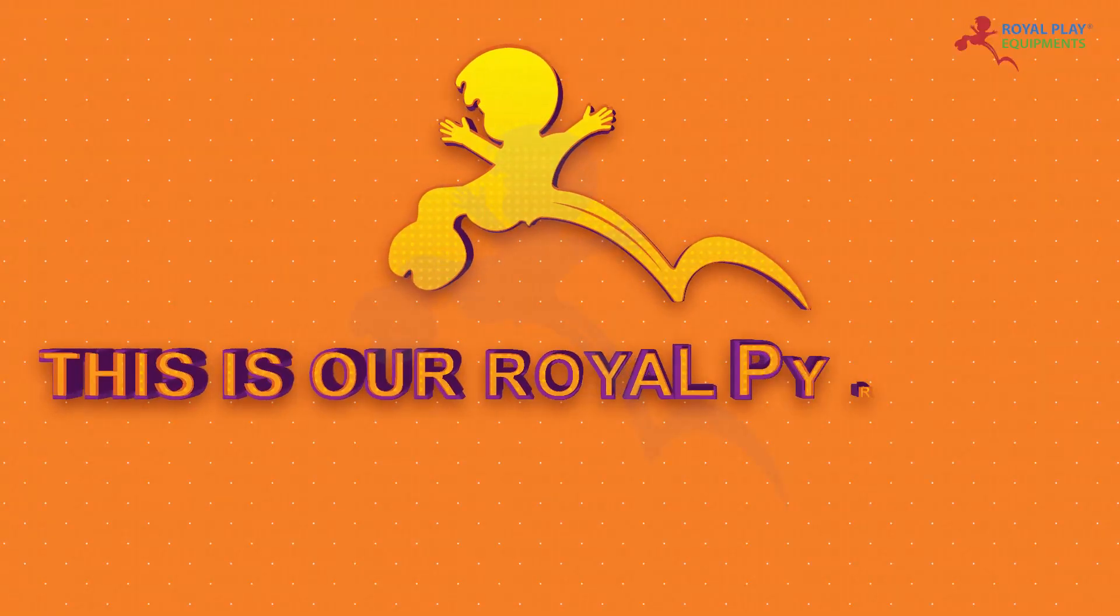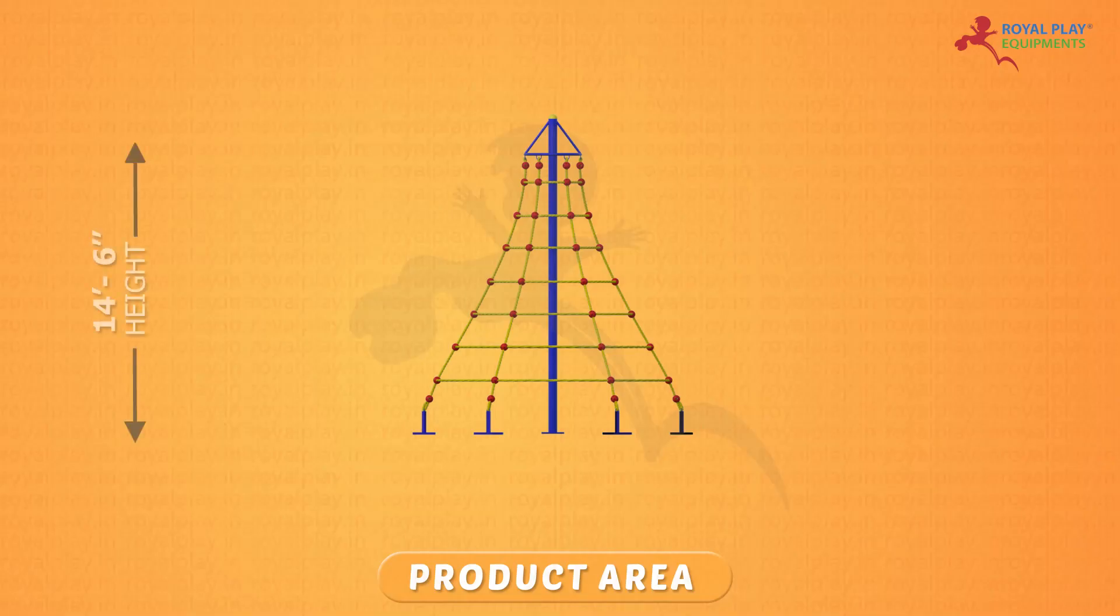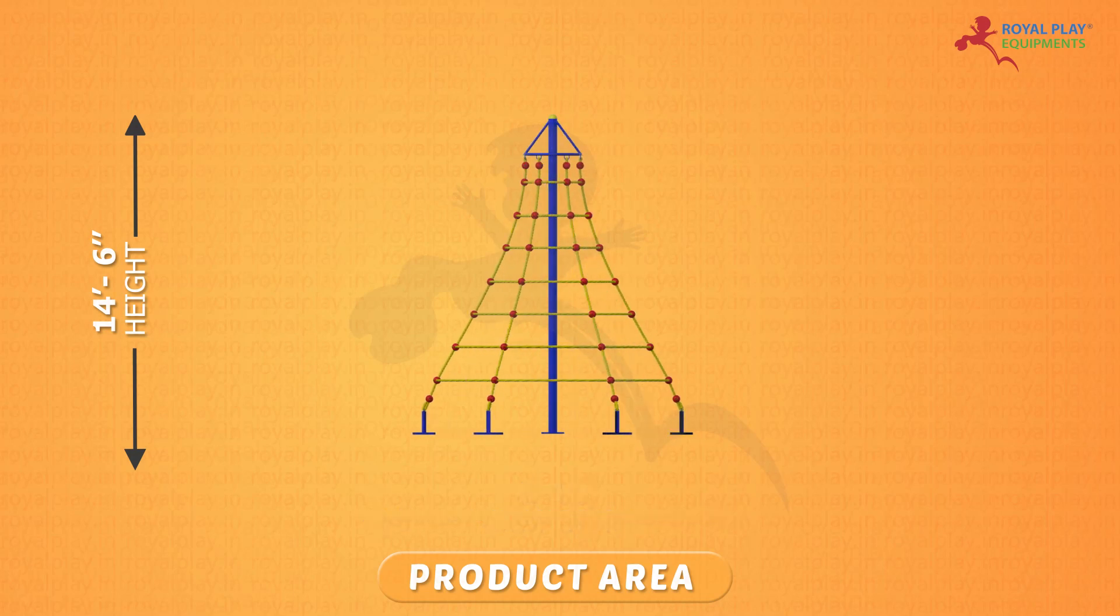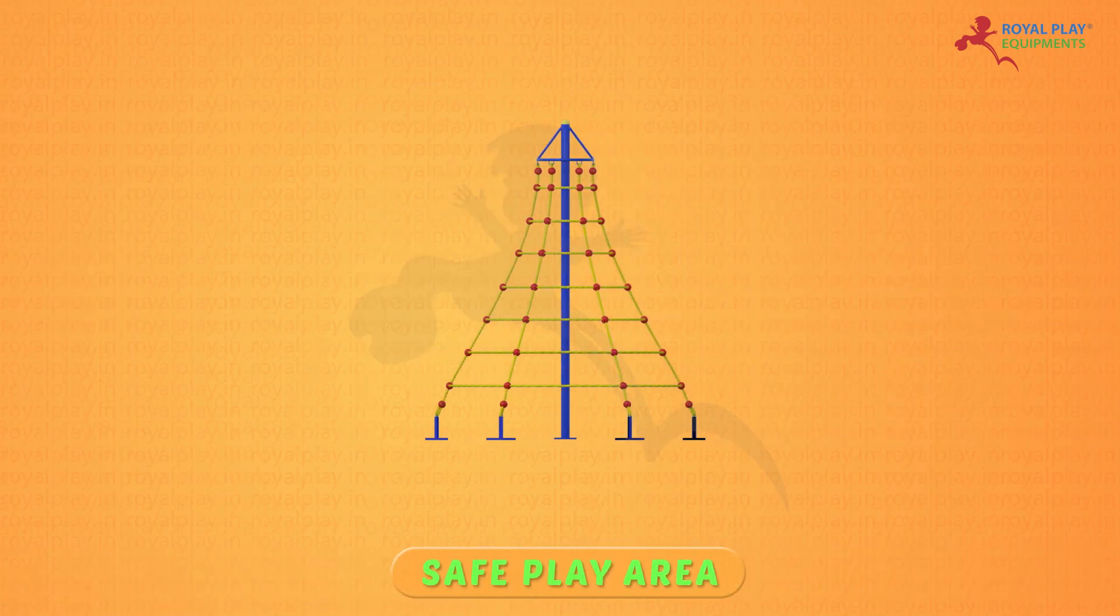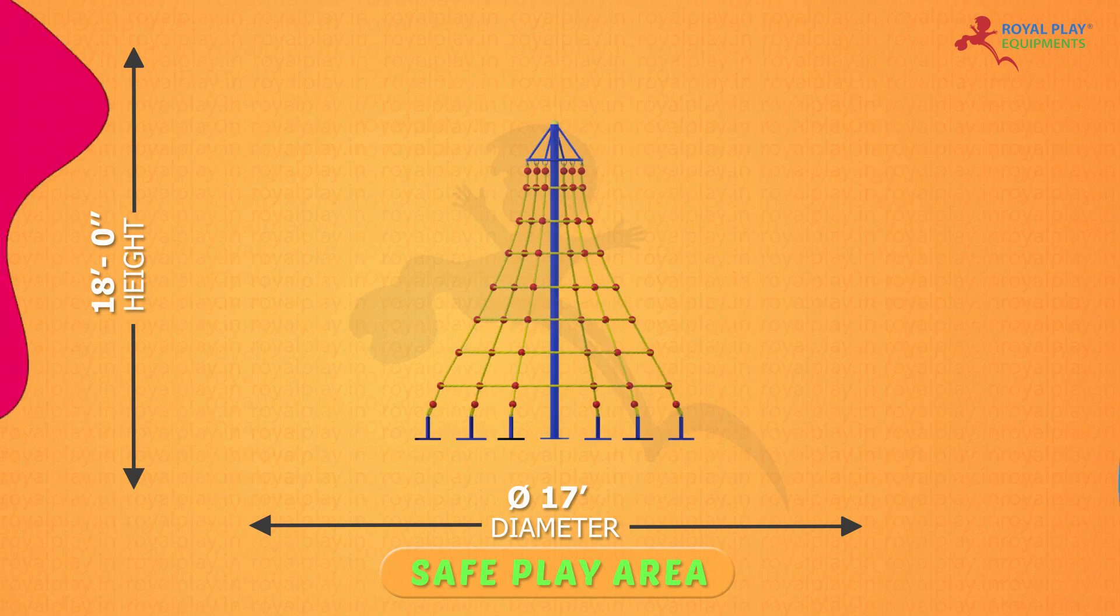This is our Royal Pyramid Net Climber FE30A. The product area is 14 feet 6 inch height, 10 feet diameter. The safe play area is 18 feet height, 17 feet diameter.